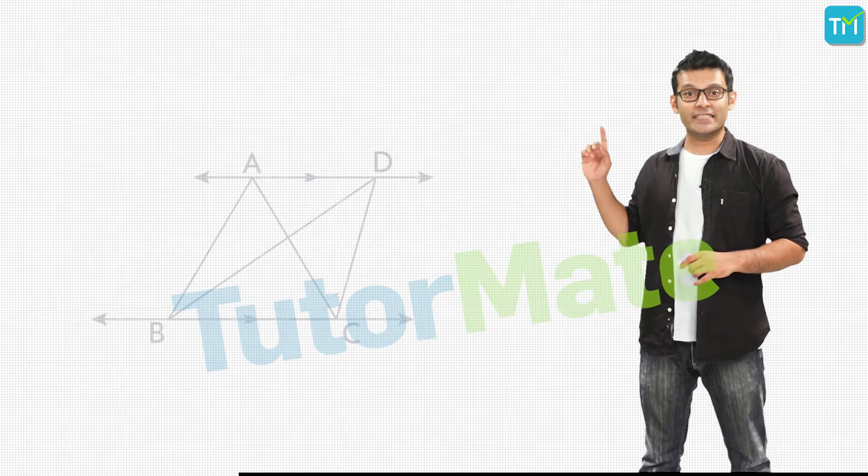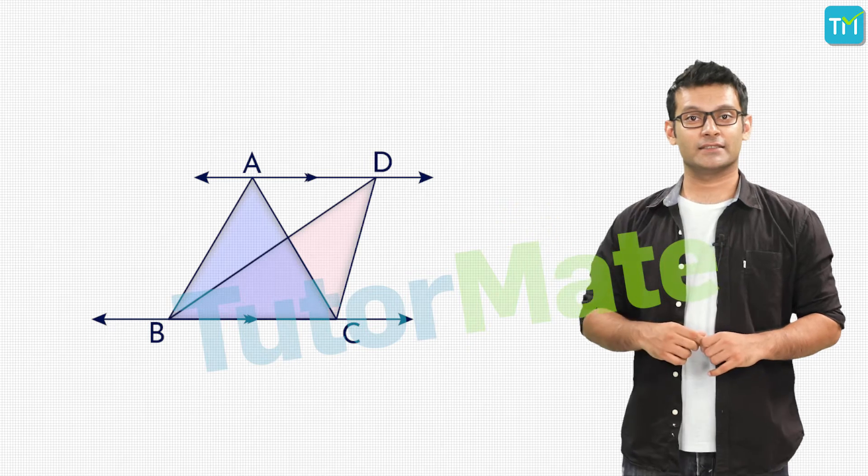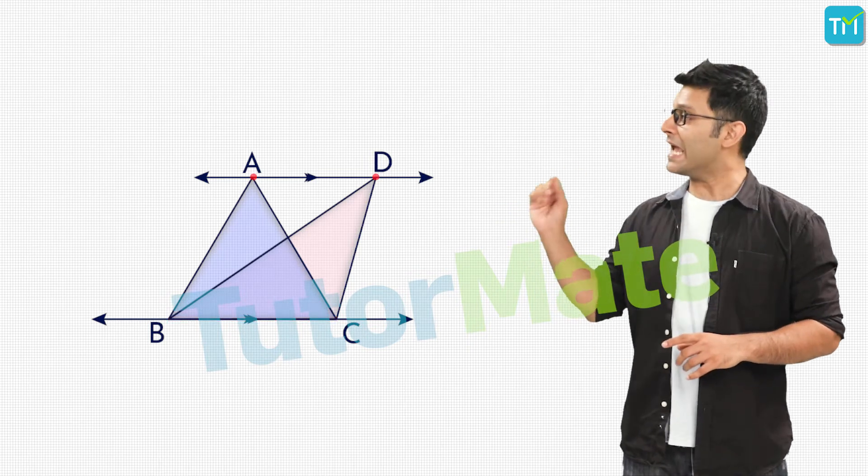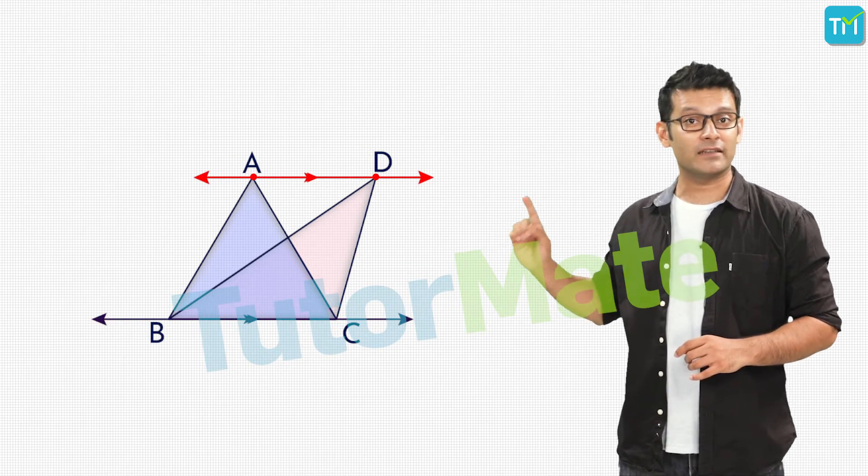Now look at this figure having two triangles, triangle ABC and DBC. With BC as the common base, the opposite vertices A and D lie on the same line and this line is parallel to BC.